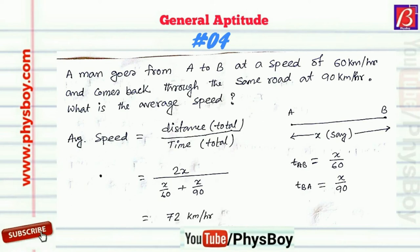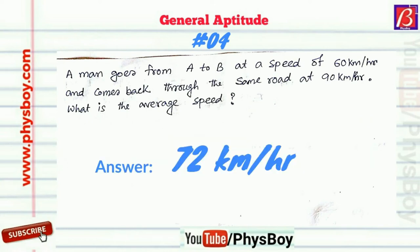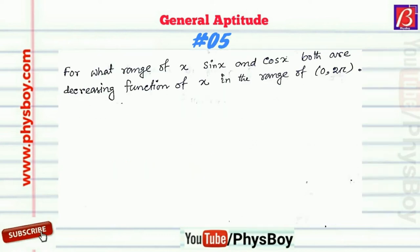So average speed will be 2X divided by (X/60 + X/90). By simplifying this we get 72 km per hour. So the average speed of the man is 72 km per hour.